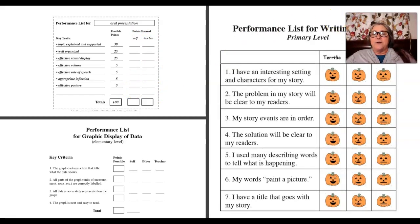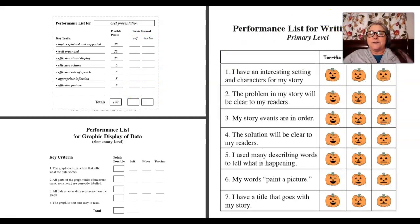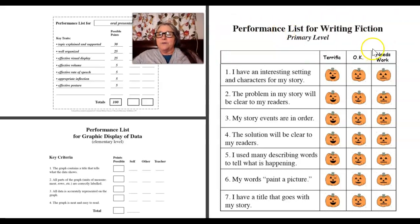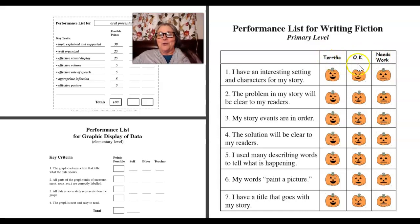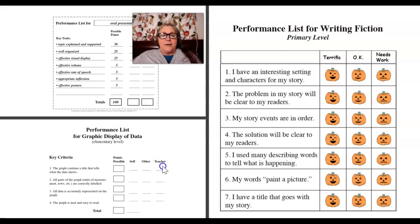Here's one that doesn't use points but uses smiley faces. It also delineates the performance — not just did they do it or didn't they, but is it terrific, okay, or needs work. For example, 'I have an interesting setting and the characters in my story' is one of the criteria for writing fiction: terrific, okay, or needs work. That's a fun way of doing it.